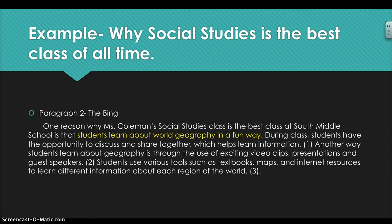So if you take that first highlighted part — learn about world geography in a fun way — you could maybe make an inference that that's going to be my first body paragraph. This is my Bing paragraph. All of the stuff in this paragraph is about why students learn about world geography in a fun way. One reason why Ms. Coleman's social studies class is the best class at South Middle School is that students learn about world geography in a fun way. During class, students have the opportunity to discuss and share together, which helps them learn information. That's the first detail. Another way students learn about geography is through the use of exciting video clips, presentations, and guest speakers — that's the second detail. Students use various tools such as textbooks, maps, and internet resources to learn different information about each region of the world — that's my third detail. Your paragraphs can have more than three details, but a good paragraph should have a minimum of three supports to the statement that you're making.